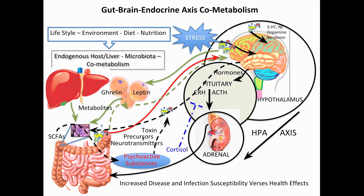The gut microbiota are associated with essential biological functions in humans through a network of microbial and host co-metabolism. We call this interaction a metabolic interactome. Here, both microbes and host process nutrients and co-metabolites to modulate the activities of multiple pathways in organ systems that are linked to different diseases.